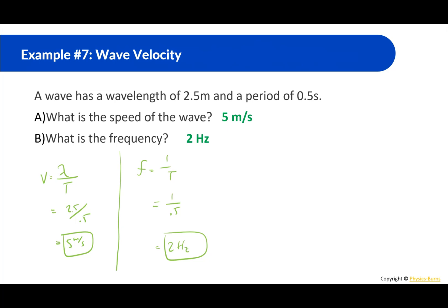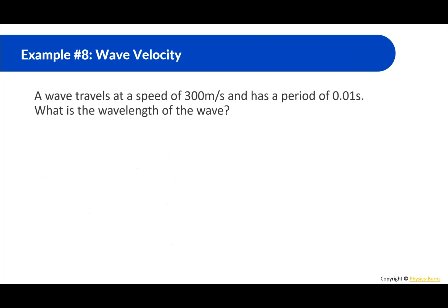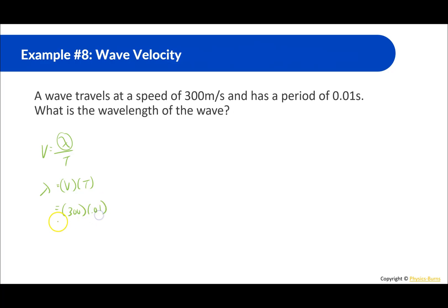A wave travels at a speed of 300 meters per second and has a period of 0.01 seconds. What is the wavelength? Velocity equals wavelength divided by period, so wavelength equals velocity times period: 300 times 0.01 equals 3 meters.